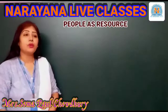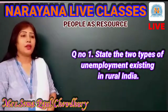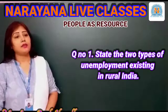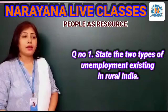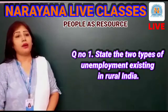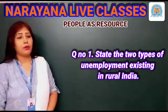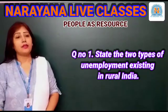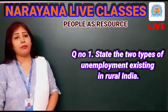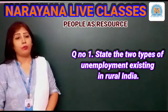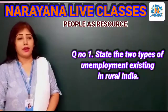Question number one: State the two types of unemployment existing in rural India. The answer is: number one, seasonal unemployment — when people are not able to find jobs during some months of the year. Number two, disguised unemployment — when the contribution made by the extra family members on one plot of land is not productive.